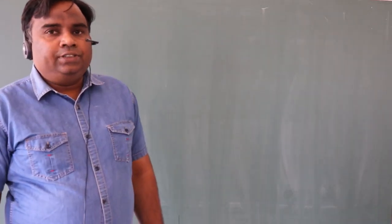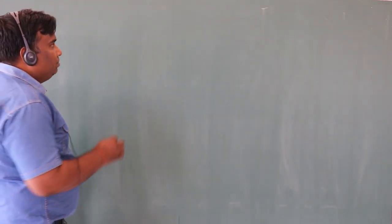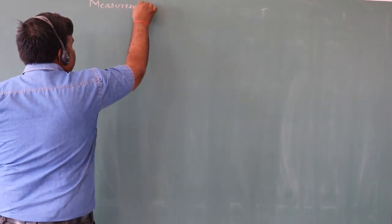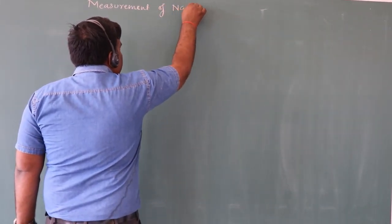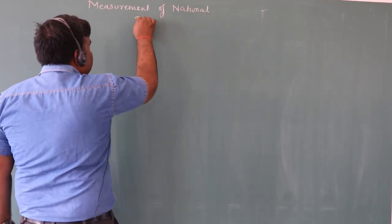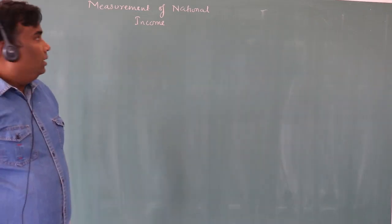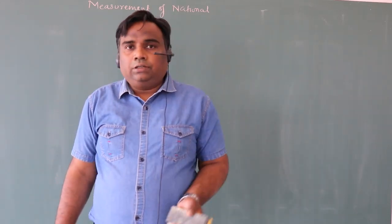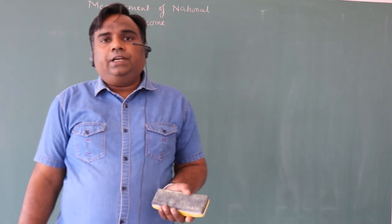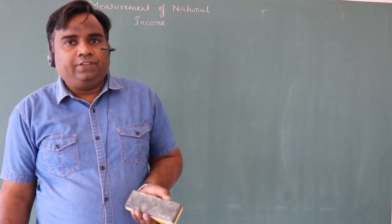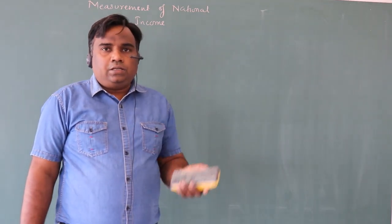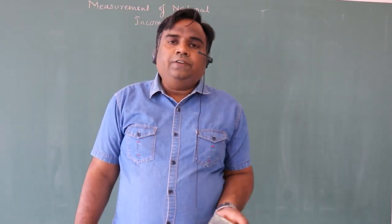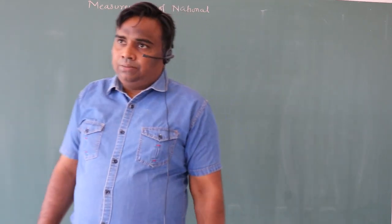Hello students. Let me start the measurement of national income. The third concept is measurement of national income — circular flow of income. There are three phases in the circular flow: generation phase, distribution phase, and disposition phase. These three phases are the phases of national income measurement, and if we measure all three phases, the answer will be the same.